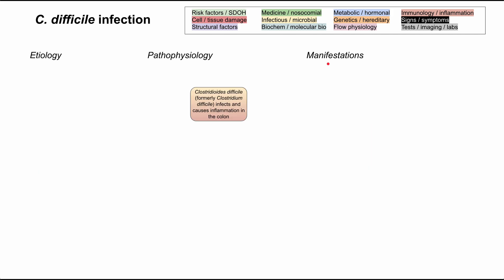At the center of the pathophysiology for C. diff infections is that you have this bacterium, Clostridioides difficile, that infects and causes inflammation in the colon. This bacteria was previously called Clostridium difficile, so the genus name was recently changed, but the species is the same and the abbreviation C. diff still works.